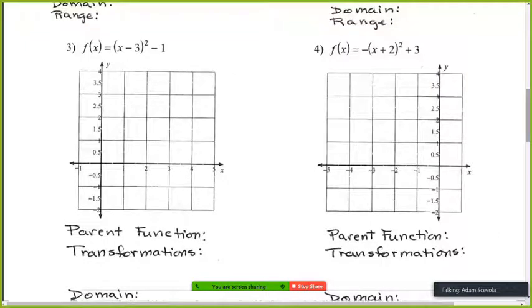Okay, so if I was graphing number three and I wanted you to give me at least three points on the graph, the first thing I would do is look at the function and think of the parent function. So the parent function is going to be just y equals x squared, so it's going to look something like that.